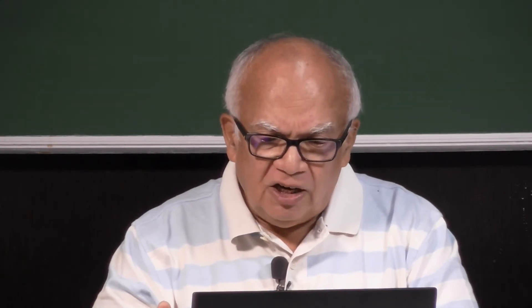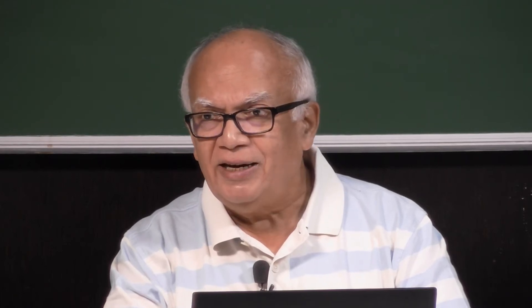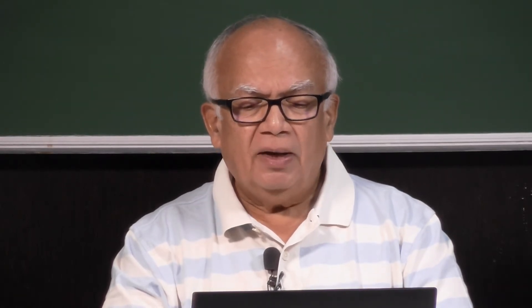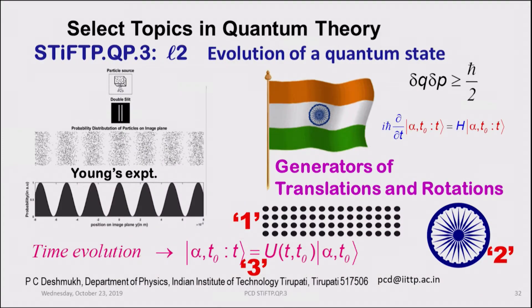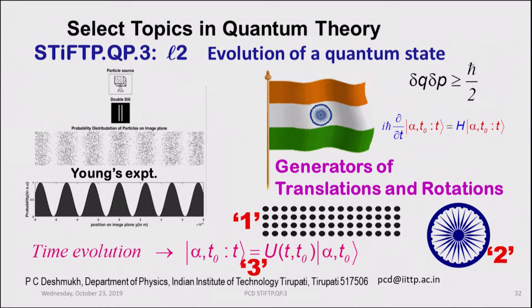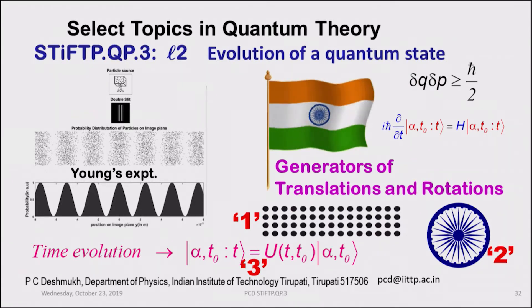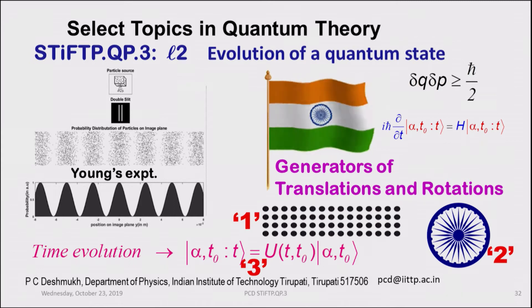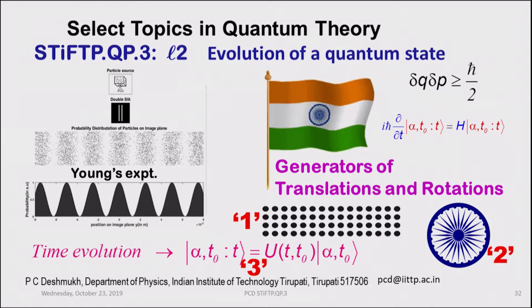These are the three operations we are concerned with: translational displacement, rotational displacement, and temporal evolution. If you know the state of a system at time t₀, you ask what is the time evolution operator U which will give you the state of the system at a different time t — it could be a later time or an earlier time. Typically we are talking about evolution into the future, although information about the past is also contained in this formalism.